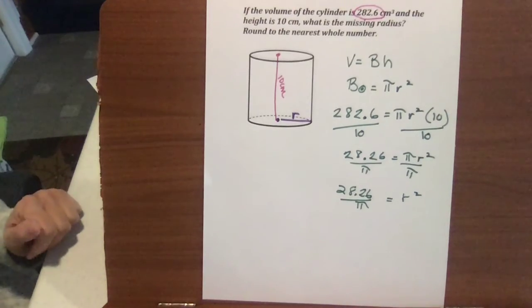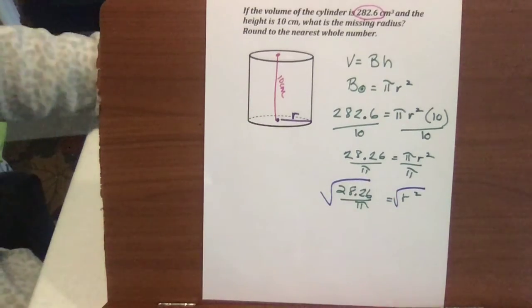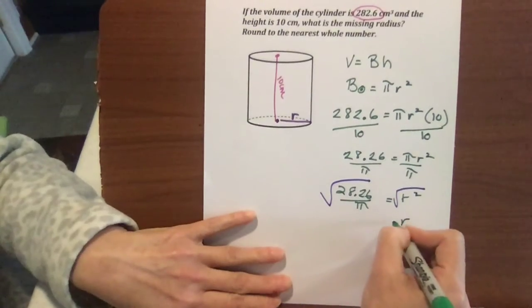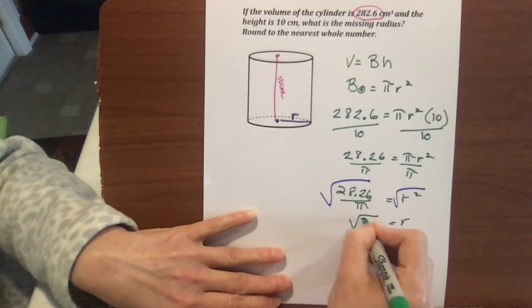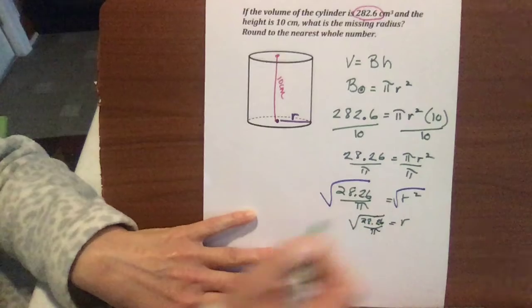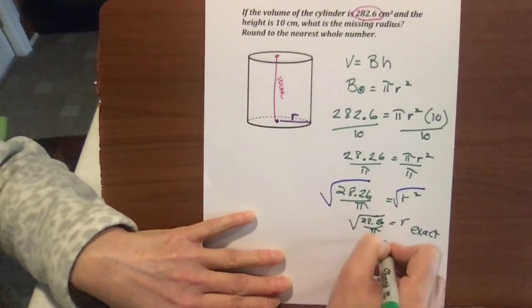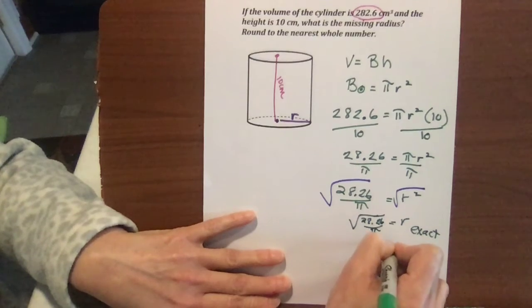Now we're going to divide by pi. So r squared equals 28.26 divided by pi. We're in a position now to solve for r, so we take the square root of each side, and we only want the positive, so r is exactly going to be equal to the square root of 28.26 over pi, all under the root. That's exact. And the units on this would be, in our case, centimeters cubed.